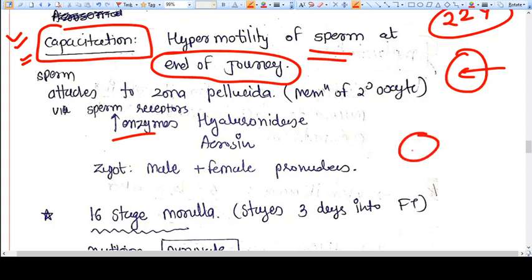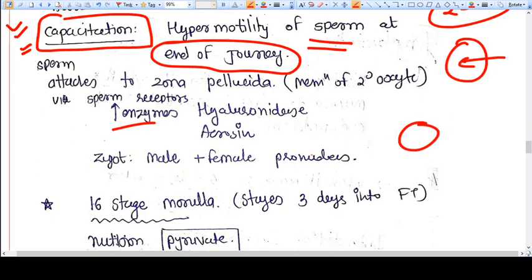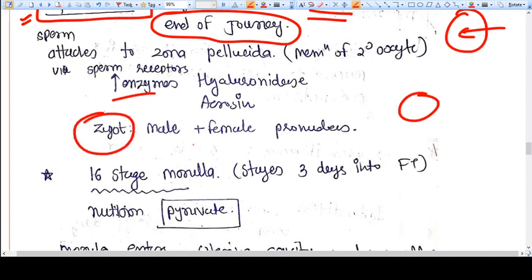Zona pellucida is the cell membrane of the secondary oocyte. The sperm have some enzymes—tissue lytic enzyme, hyaluronidase, acrosin—that will help the sperm pierce the oocyte, and we will have a zygote that has male and female pronucleus fusion.